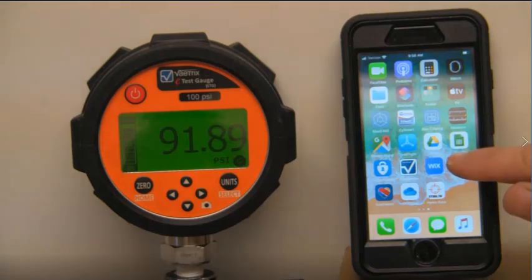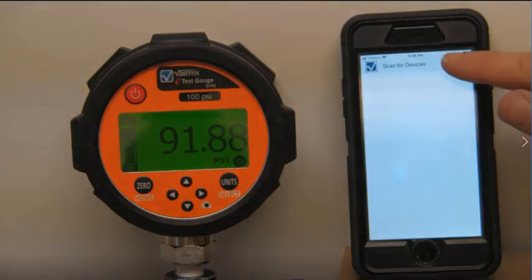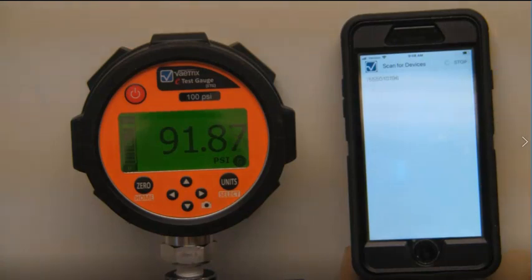Alright, to get started, I am going to launch the Remote Gauge app. We are going to scan for the device, so this is using Bluetooth Low Energy. Found the serial number, we are going to select it. So we are connecting to the gauge.